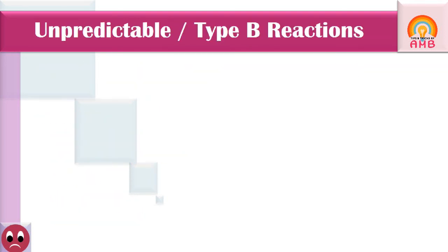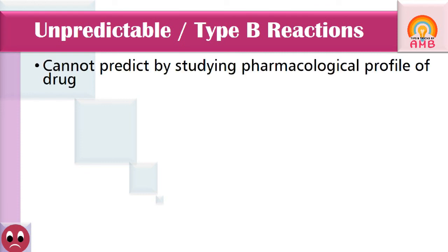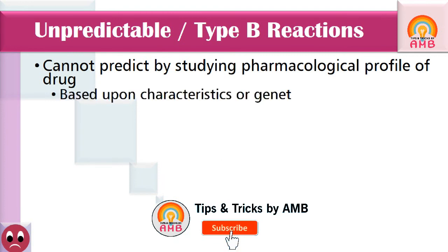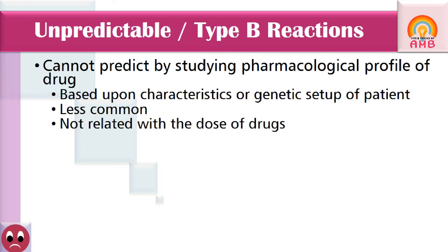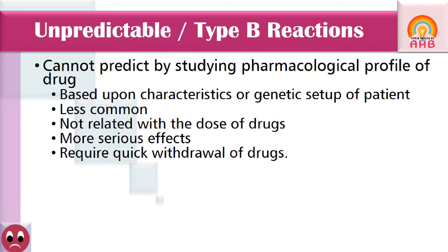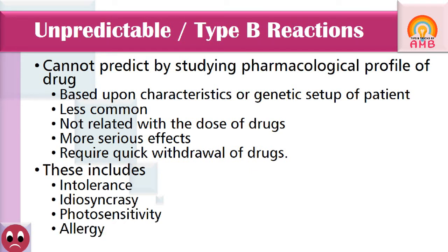Unpredictable or Type B reactions cannot be predicted by studying the pharmacological profile of the drug. These are based upon the characteristics or genetic setup of the patient. They are less common and not related to the dose of the drug, but they are more serious and require quick withdrawal of the drug. These include intolerance, idiosyncrasy, photosensitivity, and allergy.